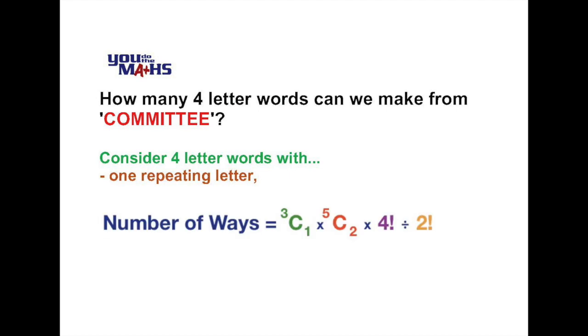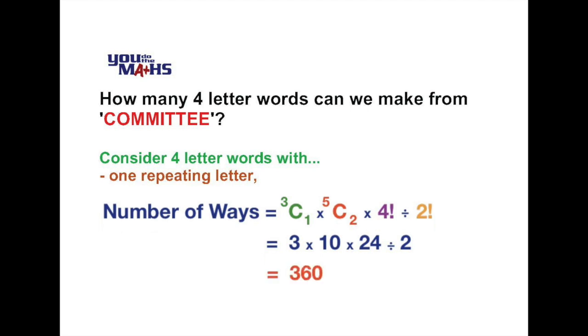In terms of a calculation we write that as follows: 3C1, that's choosing one of the three pairs M M, T T, or E E. Then we choose two from the remaining five letters that fill the two different letters, and then once we've done that we multiply by 4 factorial because that's all the different arrangements of the four letters. But we do have to divide by 2 factorial because there's a double up. So we need to consider the fact that letters like M M, for example, if they're repeated and rearranged they still represent the same word. So performing that calculation we can see that 3C1 is 3, 5C2 is 10, 4 factorial is 24, and going through and doing the calculation, 3 multiplied by 10 multiplied by 24 divided by 2 equals 360.